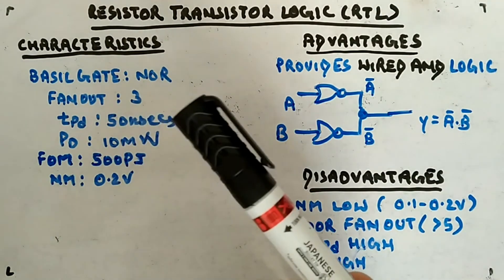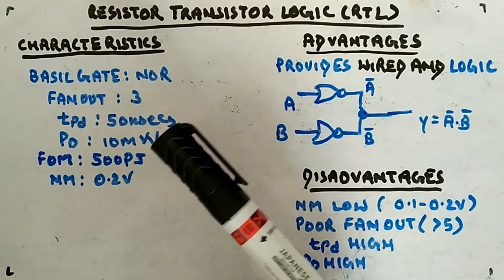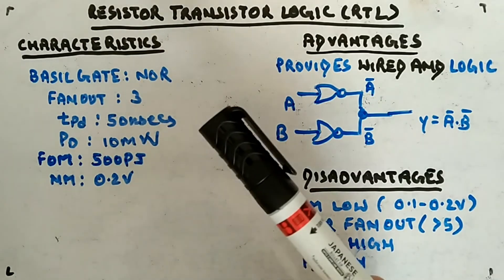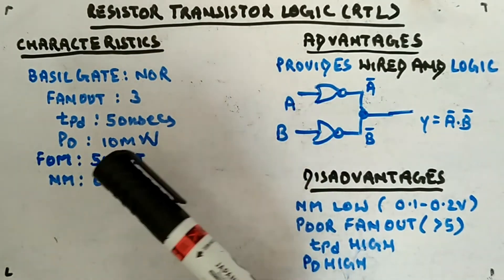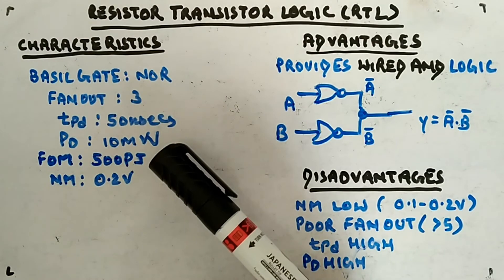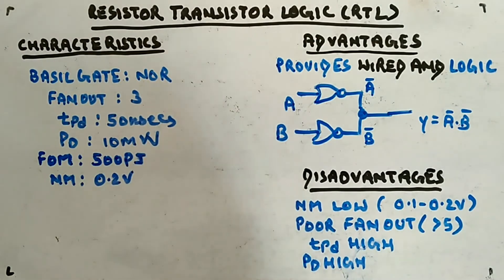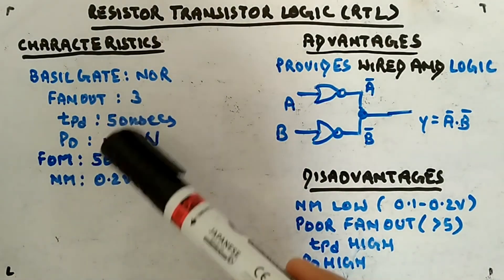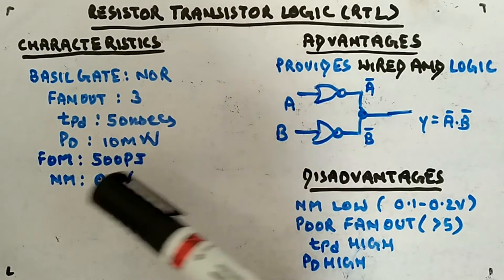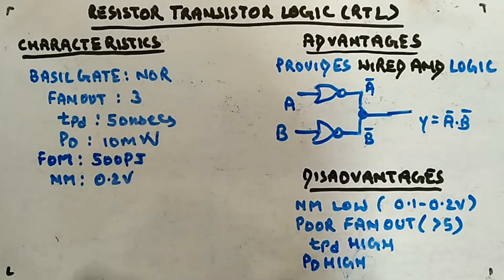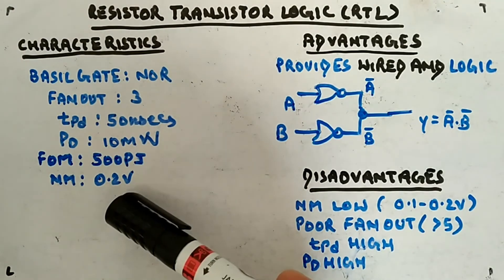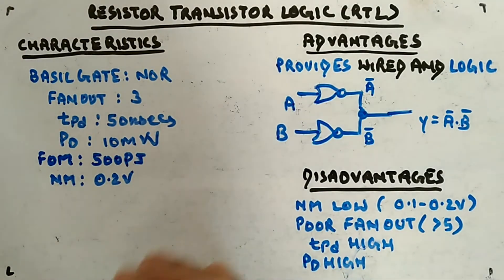Tpd is very high - 50 nanoseconds around. If it is around 30 or less, 10 nanoseconds or something like that, then it is better. Pd is also high - 10 milliwatt around or 12 milliwatt sometimes. The product of this you can see is 500 picojoule FOM - the lower is better. Noise margin is also 0.2 volts - you are getting very less margin among inputs and output voltage.